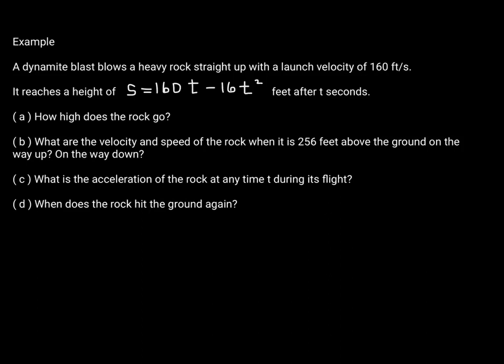A dynamite blast blows a heavy rock straight up with a launch velocity of 160 feet per second. It reaches a height of S equal to 160t minus 16t squared feet after t seconds. The questions are: how high does the rock go, what are the velocity and speed of the rock when it is 256 feet above the ground on the way up and on the way down, what is the acceleration at any time t, and when does the rock hit the ground again? Let's answer this a piece at a time, starting with how high the rock goes.